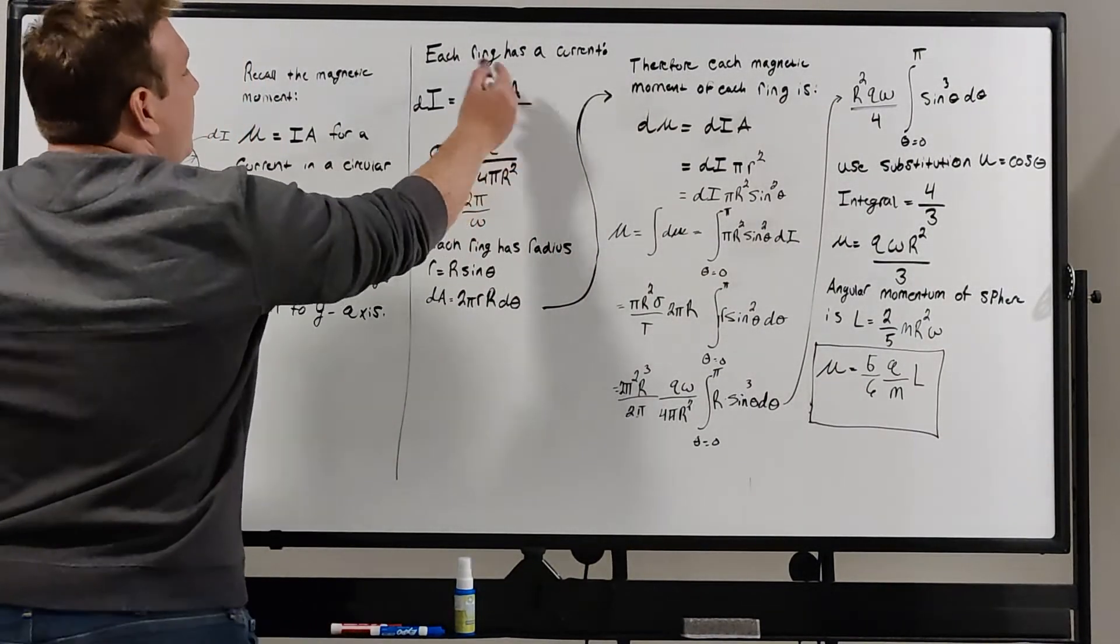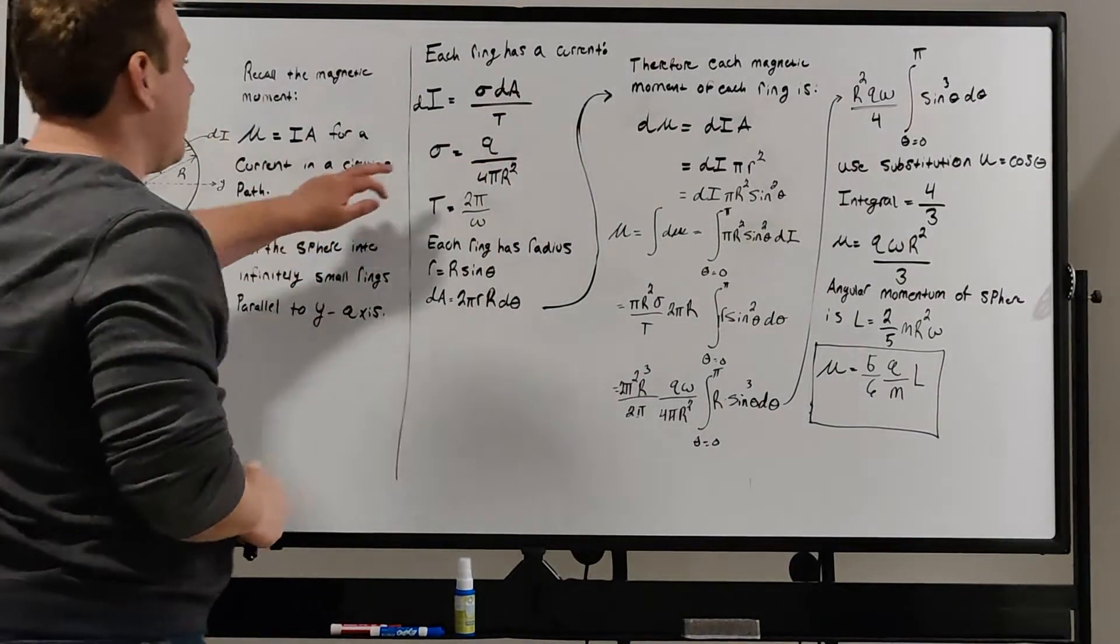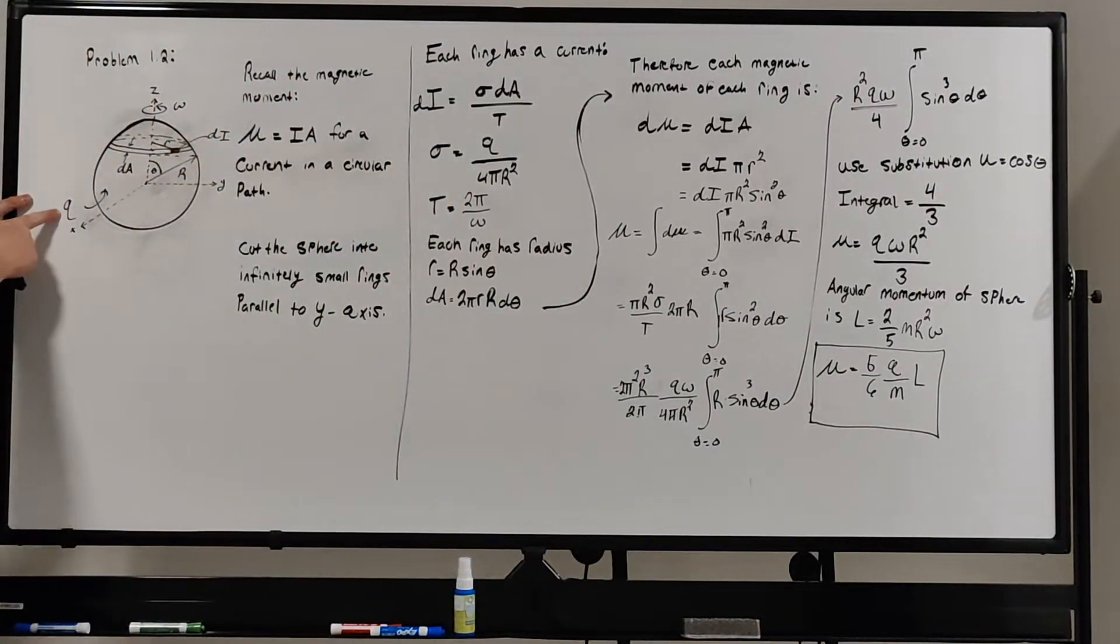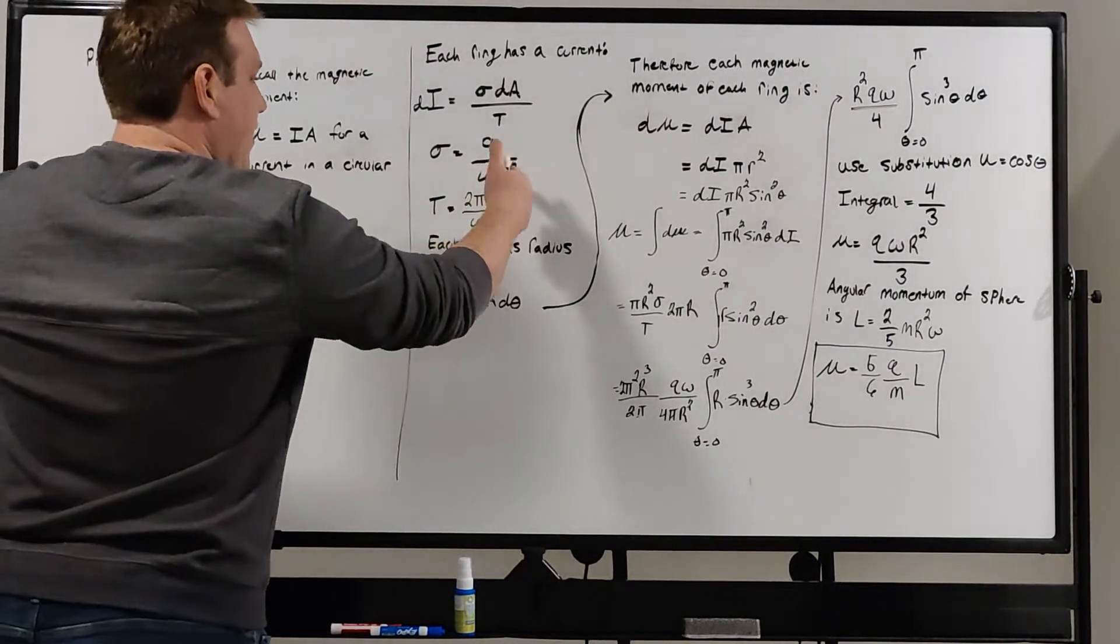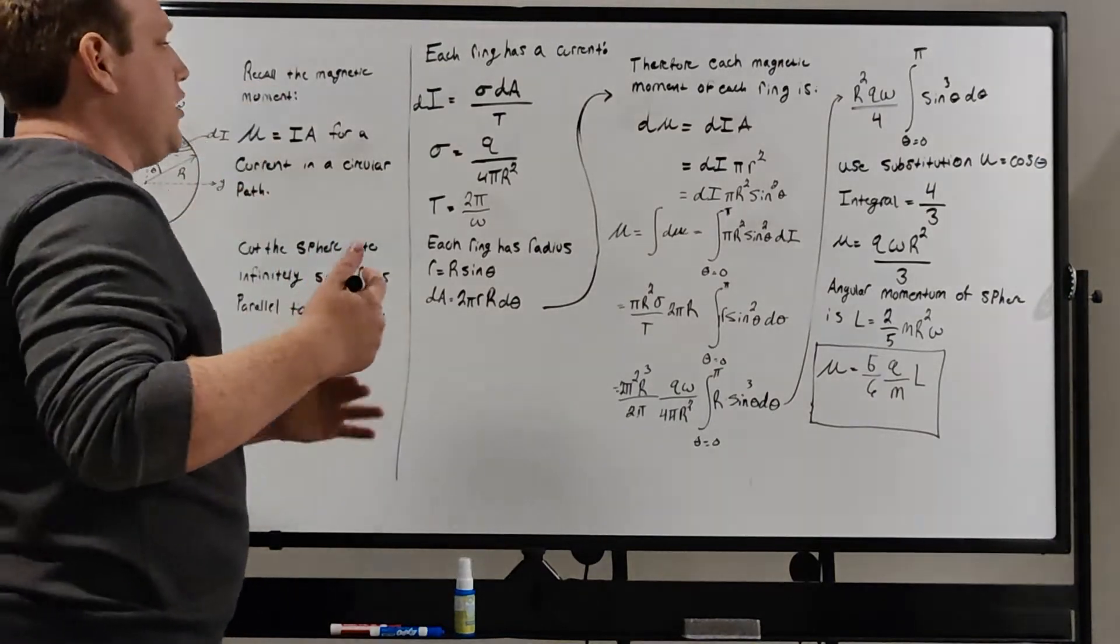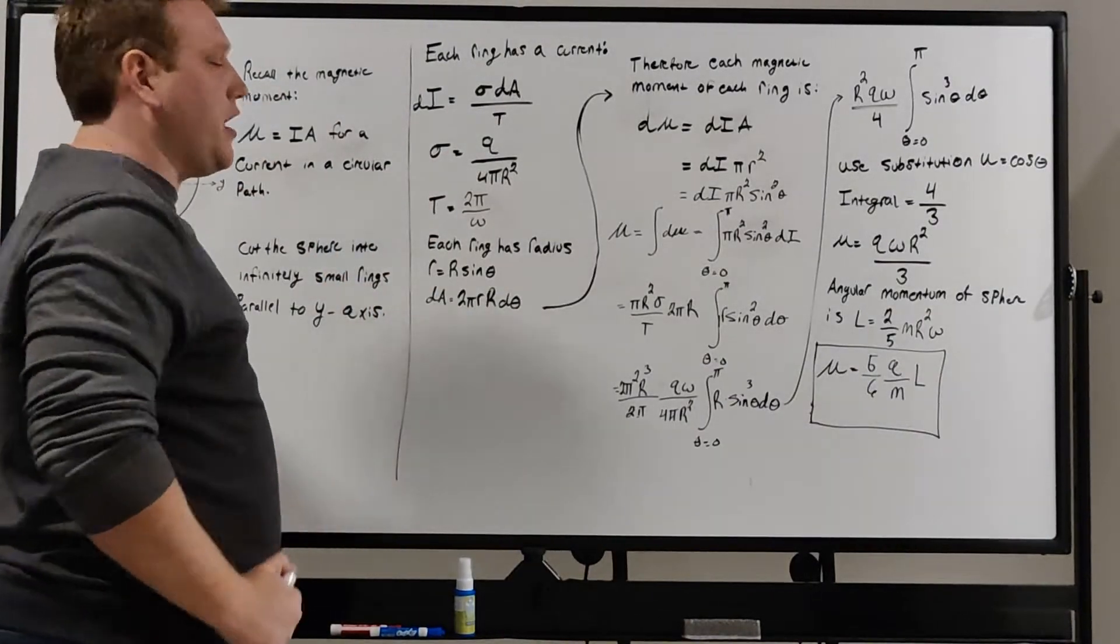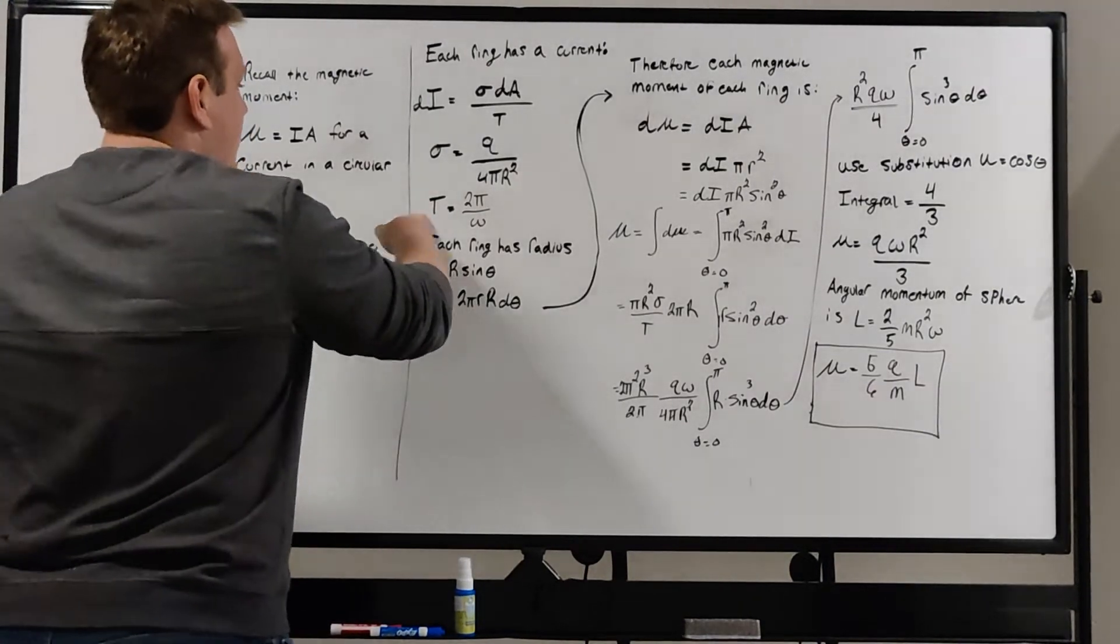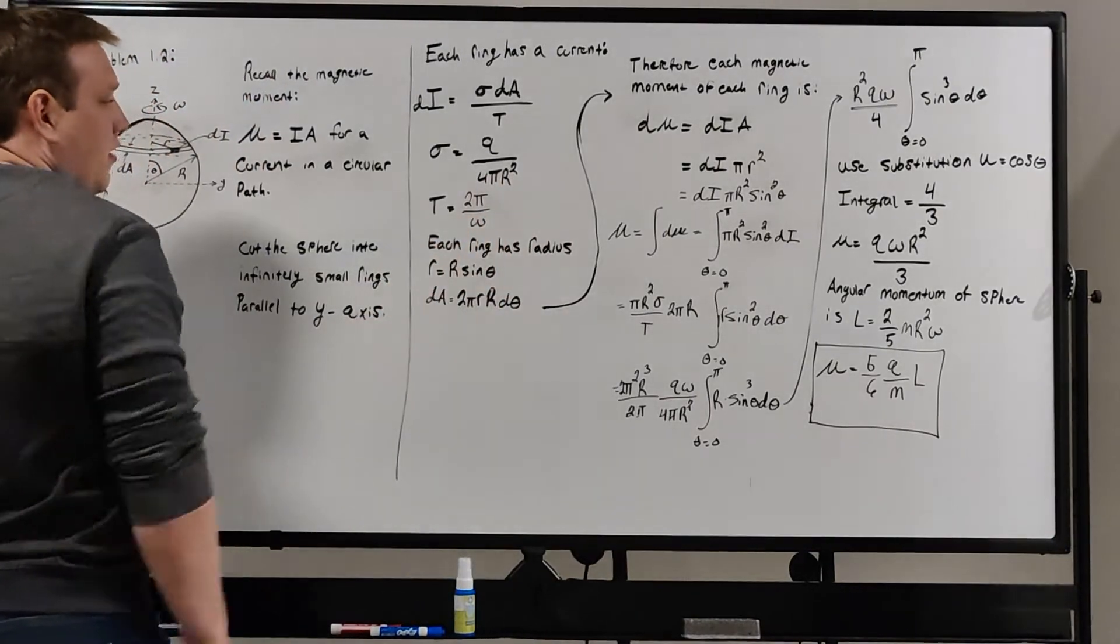That gives us the infinitesimal current of each ring, where sigma is the total charge Q divided by the surface area of the sphere, 4 pi capital R squared, which is the charge per unit area. The period t, expressed in terms of the angular velocity, is just 2 pi over omega.